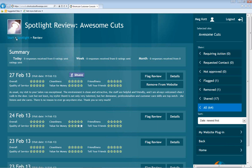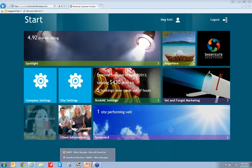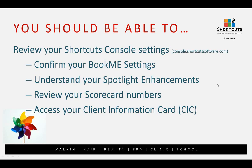Those are a quick review of some of the features that are part of the SMART system — a quick review and introduction of new features coming in the next couple of weeks. We reviewed the Shortcuts console, looked at BookMe settings with some new ones, Spotlight enhancements, and you now know what the difference between a thumbs up, sideways thumb, and thumbs down means in Scorecard. You can also access your client information card and see information there.